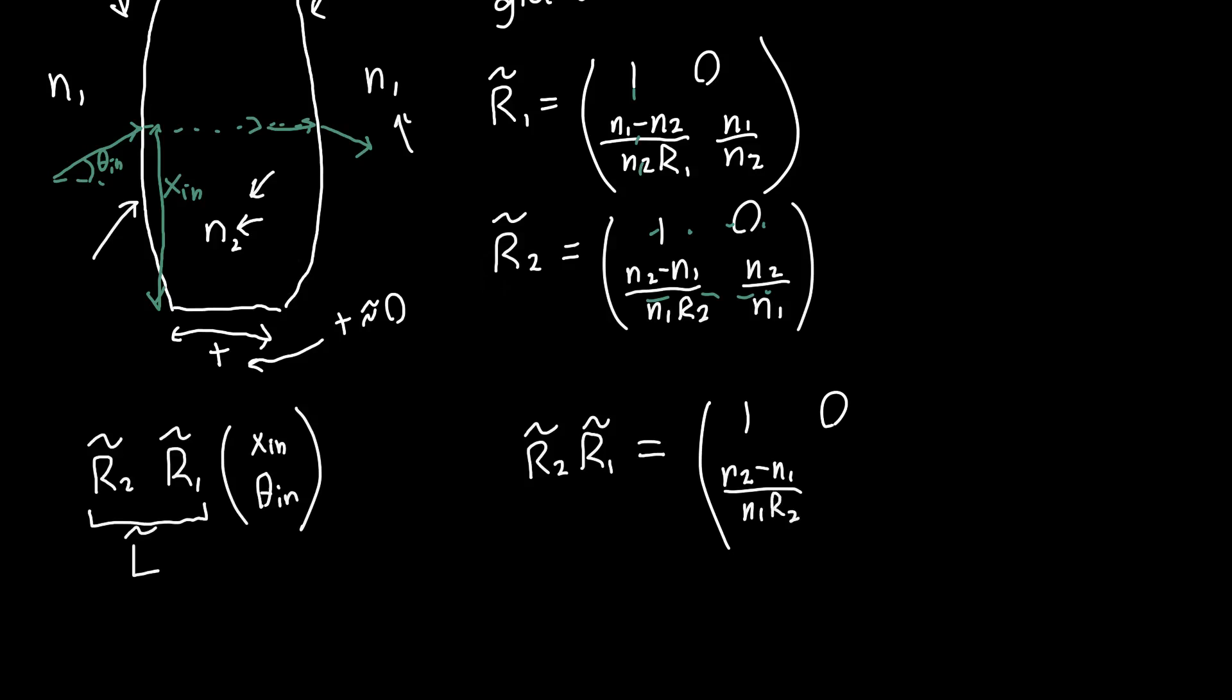This is n2 minus n1 over n1 R2 times 1, plus n2 over n1 times n1 minus n2 over n2 R1. Then the last element is going to be the bottom row times the left column. That's just n1 over n2 times n2 over n1—that's just 1.